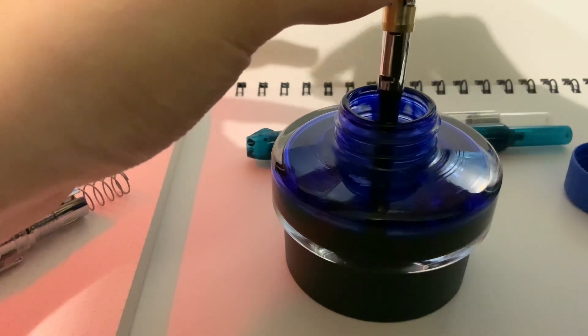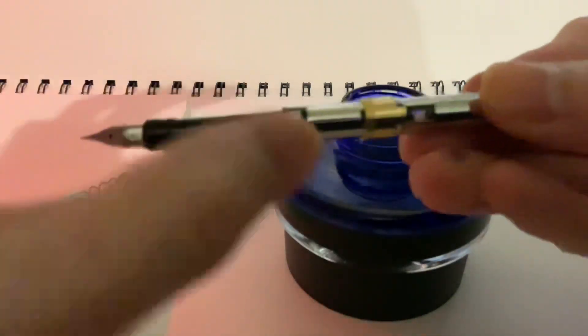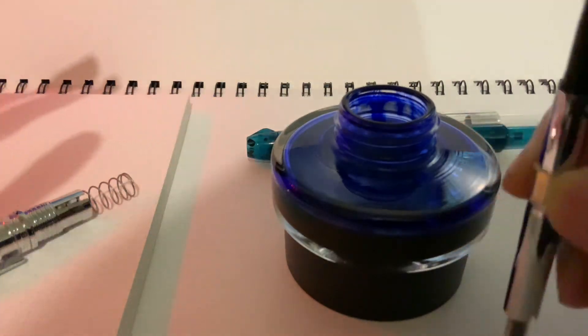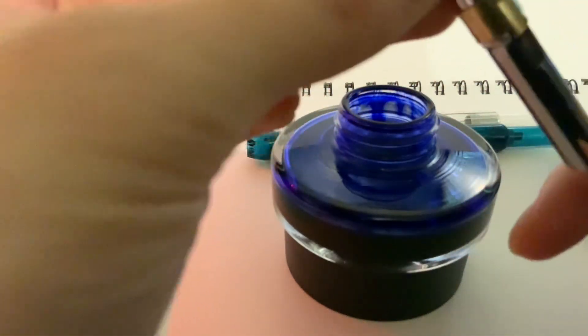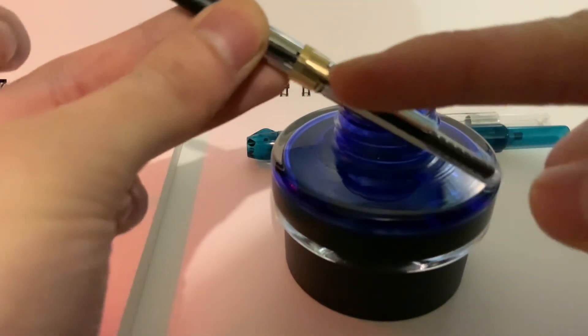You can see the shadow of me turning it clockwise. And let's tap that down there. You can see that there's, I'm not sure if it'll focus, but there's some ink right there.